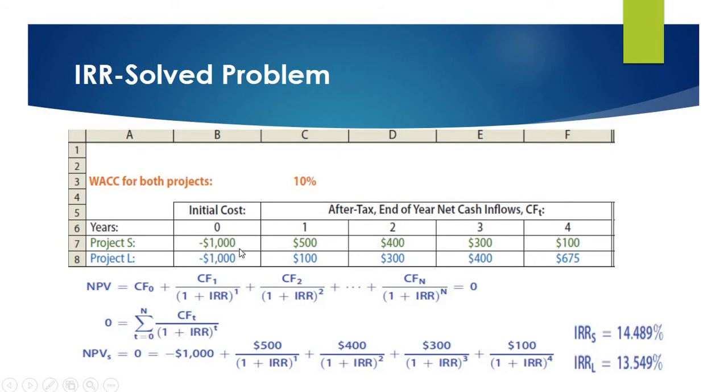Now let's look at the cash flows of Project S. Project S will provide $500 in year 1, $400 in year 2, $300 in year 3, and $100 in year 4.